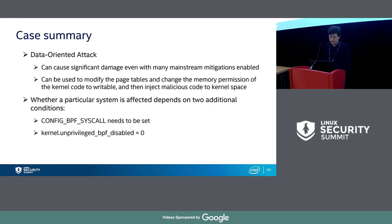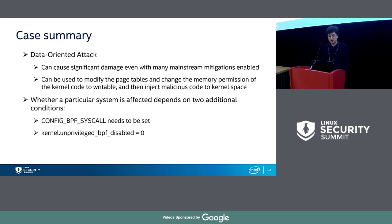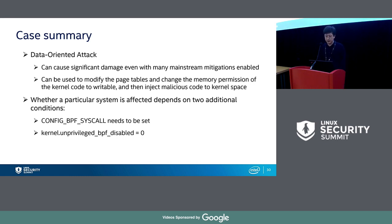A simple case summary: this should be considered a data-oriented attack with the ability to cause great damage. This type of attack can modify page tables and change the memory permissions of kernel code to be writable, then inject malicious code into kernel space. For example, we can patch the implementation of the control-flow check to bypass KCFI. The good news is that many Linux distributions are not affected because they don't enable eBPF or they don't allow normal user access.